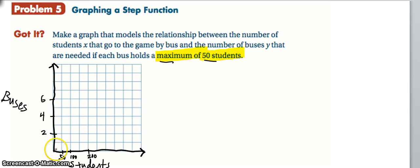So what we see here is that at no point can I have zero buses. Zero buses would not work unless I have zero students. So if I have zero students, I can have zero buses. But that's it. As soon as I have any students, I need one bus.